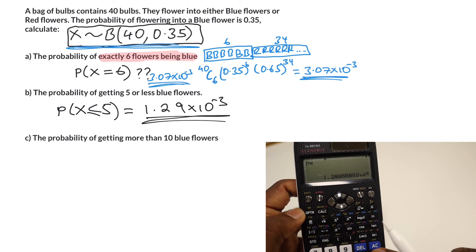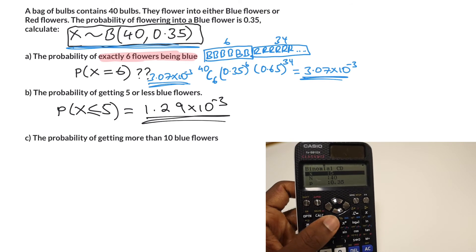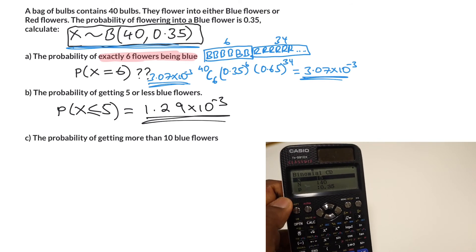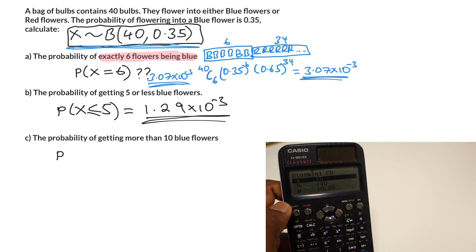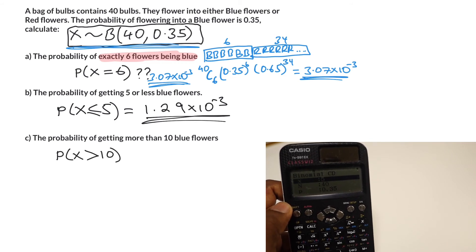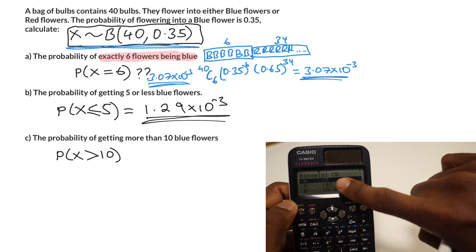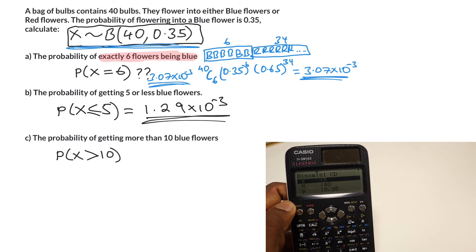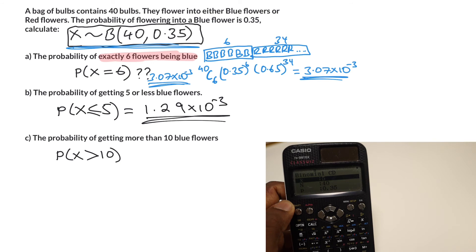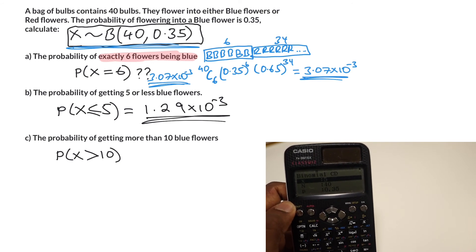Part c, now we're looking for the probability of getting more than 10 blue flowers. So what are we looking for? Probability of greater than 10. But how do we get this? When we use the binomial CD function in your calculator, what it does is it accumulates all of the probabilities up to a certain value.